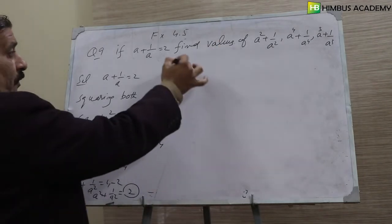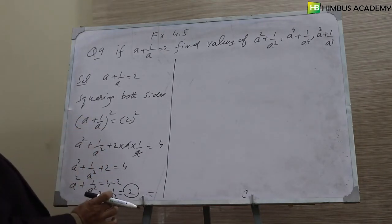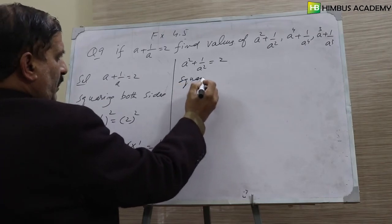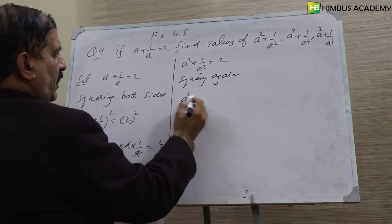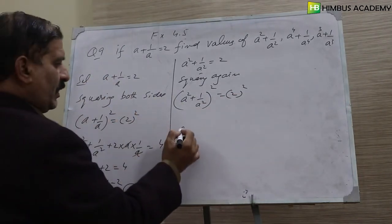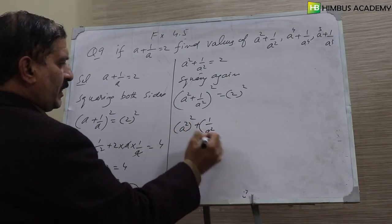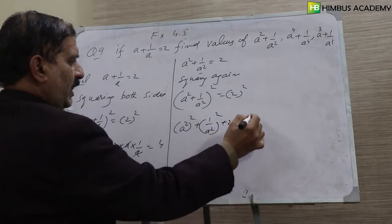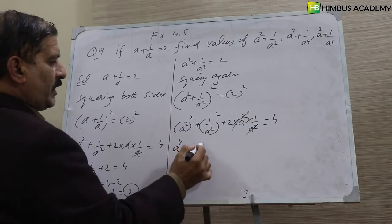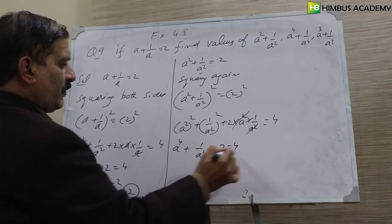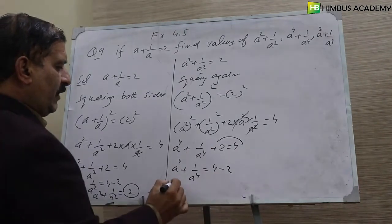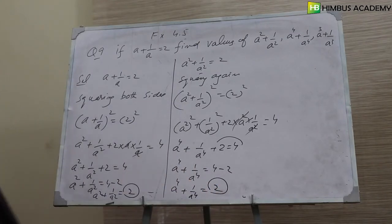For the second part, a to the power 4, we square the result we just got. Taking a squared plus 1 over a squared equals 2, and squaring again. Applying (a+b)² formula: a⁴ plus 1 over a⁴ plus 2 equals 4. So a⁴ plus 1 over a⁴ equals 4 minus 2, which equals 2. This answer is also 2.